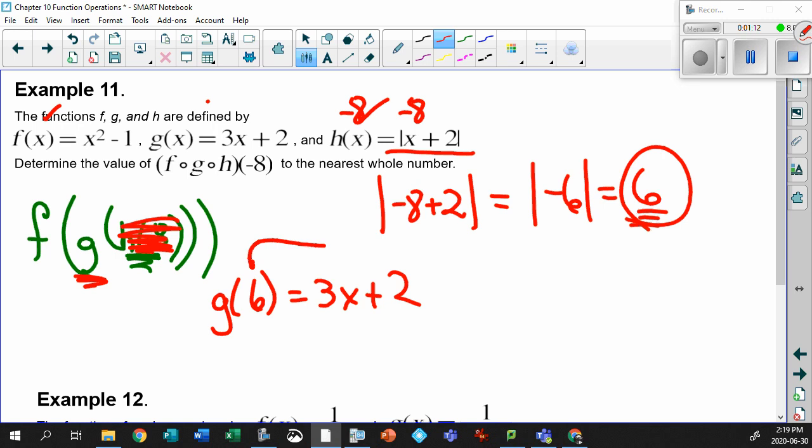So put the 6 in: 3 times 6 plus 2. 3 times 6 is 18, plus 2 gives us 20.